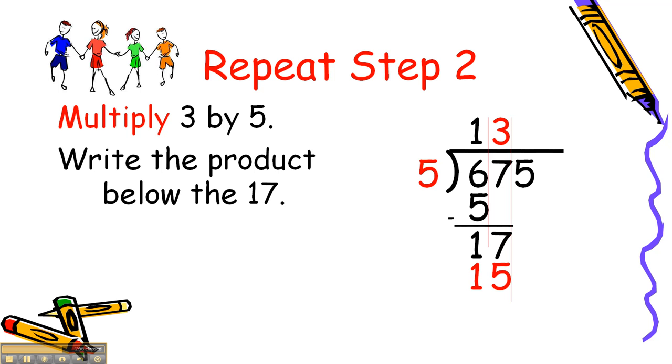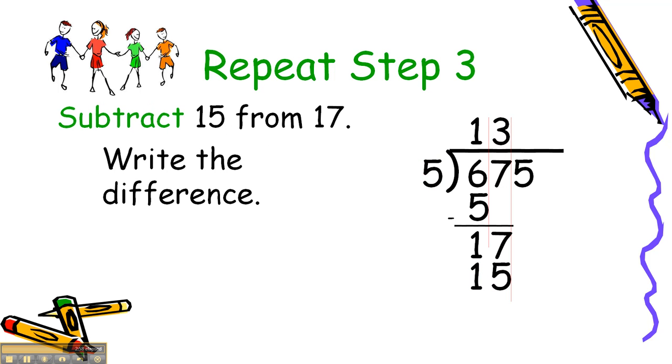Let's go to step 3, which is subtract. We're going to subtract 15 from 17 in this problem and write the difference. So we put the subtraction sign, the bar, and subtract 15 from 17 and we get the answer 2.